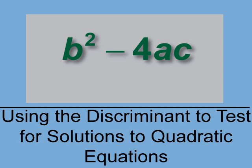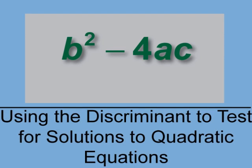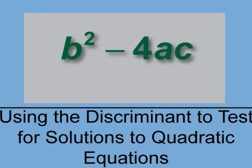There are a number of techniques for solving quadratic equations, but none of these techniques is of any use if the quadratic has no real solutions. So the discriminant is a useful tool for testing if a quadratic has any solutions at all. In this video, we'll look at examples where we use the discriminant to determine if a quadratic has any real solutions.